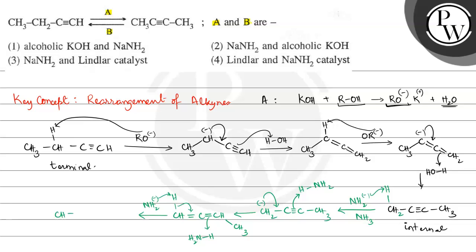Then here we have CH2 then CH3. So this is again a terminal alkyne because here C triple bond C present. So internal alkyne convert, reagent responsible is amide ion.